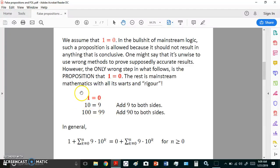Now, to get from this first step to the second step, we add 9 to both sides. So 1 plus 9 is 10, and 0 plus 9 is 9. And likewise, we'll add 90 to both sides, so 100 is equal to 99. So that in general, you can have this identity here, which you see down here: 1 plus the sum from k equals 0 to n of this expression is equal to 0 plus the sum of k equals 0 to n of this expression for all n equal to 0 or greater.